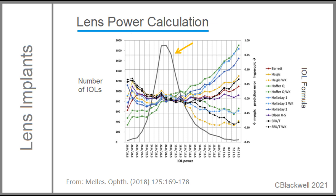One last item: the gray line shows the number of implants done at each power in this study, which reflects general usage. Low power lenses are for myopes; higher power lenses are for hyperopes.